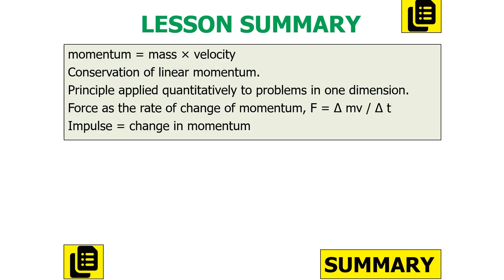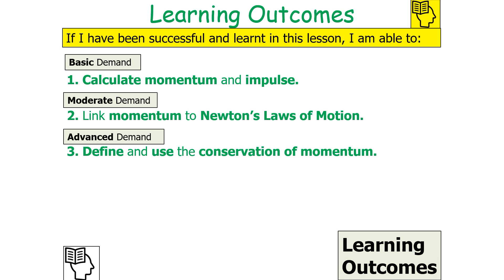To summarise today's lesson: momentum equals mass times velocity; we've looked at the conservation of linear momentum; force can be linked to the rate of change of momentum; and impulse equals the change in momentum. If we've been successful, we can calculate momentum and impulse, link momentum to Newton's laws of motion, and define and use the conservation of momentum. Thank you very much for watching this lesson on momentum and impulse, part of the mechanics topic in AQA A-level physics.